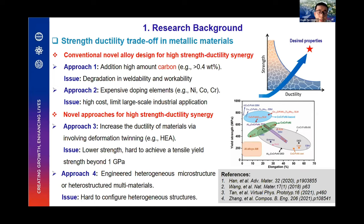A second approach is the addition of expensive alloying elements such as nickel, cobalt, chromium, etc., which leads to high cost and limits large-scale industrial application. There are also newer approaches for high-strength ductility, such as increasing the ductility of material via deformation twinning, with high entropy alloys being a typical example.